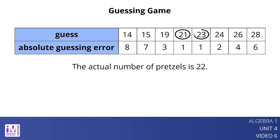21 and 23 are both winning guesses. Even though one number is an underestimate and the other an overestimate, 21 and 23 are both 1 away from 22.